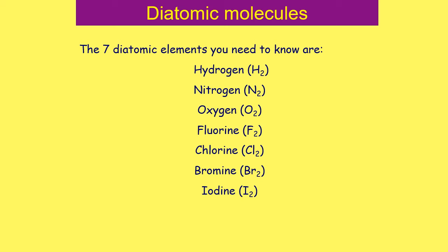If you have a periodic table handy, you might notice that many of those elements are in the same group. Fluorine, chlorine, bromine, and iodine all end in '-ine' and are halogens in Group 7.